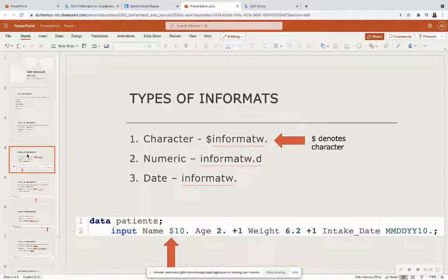So in this example, name is a character informat. It is denoted by a dollar sign, and it has a width of 10. Notice that the W in informat stands for width.